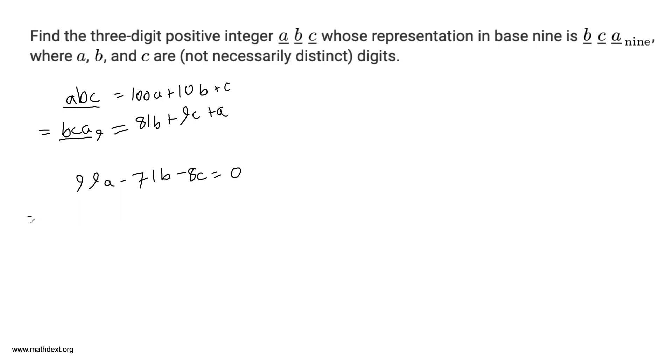Like for example, let's say we plug in A equals 1. This is experimental. A might not be 1 at all, but we can try A equals 1 and then maybe try A equals 2 or 3. If this doesn't work, you get 99 times 1 minus 71B minus 8C is equal to 0. So 99 is equal to 71B plus 8C.